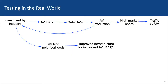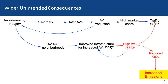Before we can put AVs into real traffic, we have to test them in neighborhoods. The industry would want to make sure the neighborhoods could handle AV traffic, so there may be some advantages — for instance, improving infrastructure within neighborhoods so that AVs could navigate them more easily. However, if infrastructure is improved, this would increase AV usage.